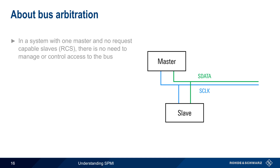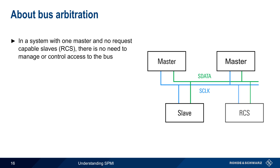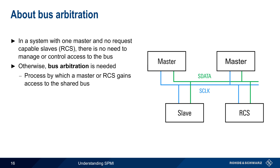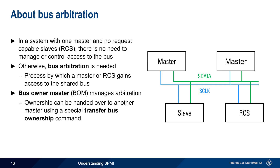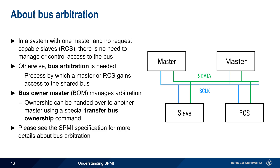In a system with only one master and no request-capable slaves, there's no need to manage or control access to the bus, since the bus will always be controlled by the single master. However, if a bus contains additional masters or request-capable slaves, then a bus arbitration process is needed for determining who gains access to the shared bus. This process is managed by the bus owner master, who can also transfer ownership to another master by means of a special Transfer Bus Ownership command. Since the bus arbitration process is somewhat complicated and is only needed in some cases, we won't cover it in detail here — please see the SPMI specification for a complete description.